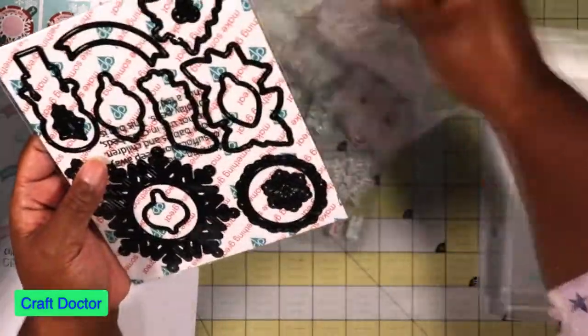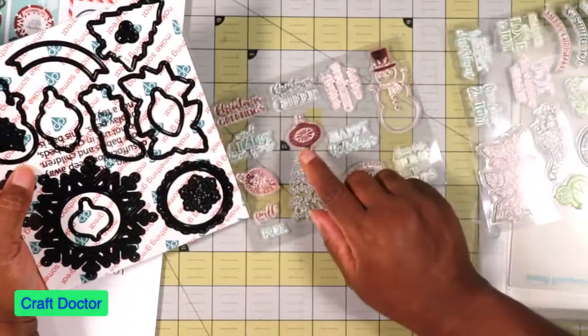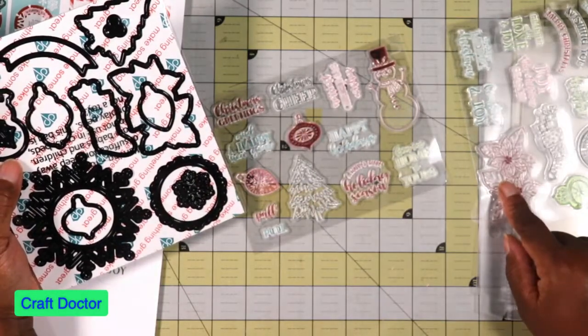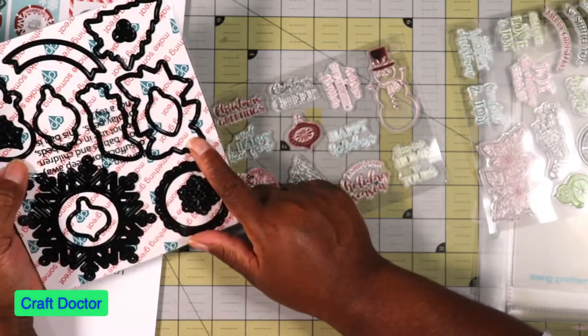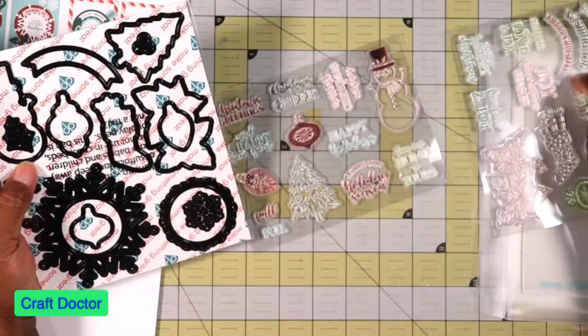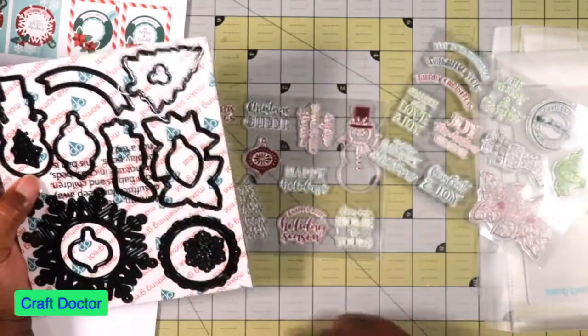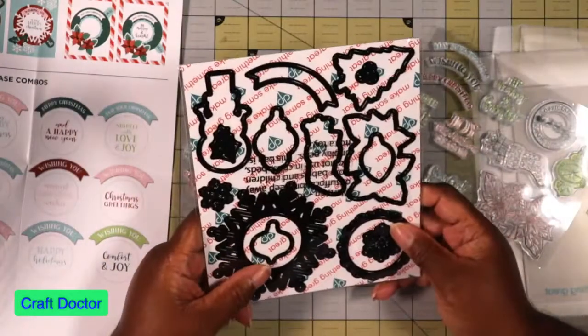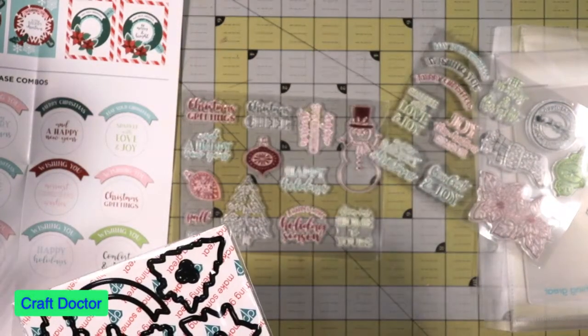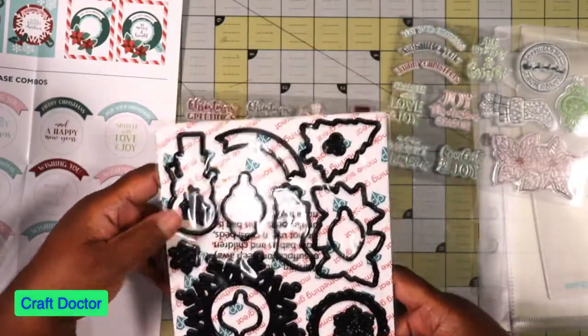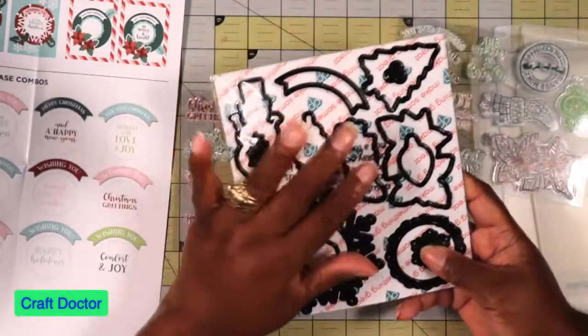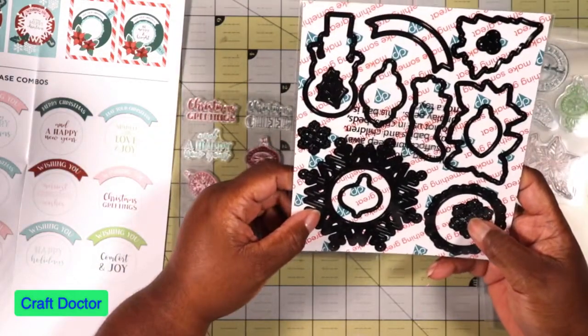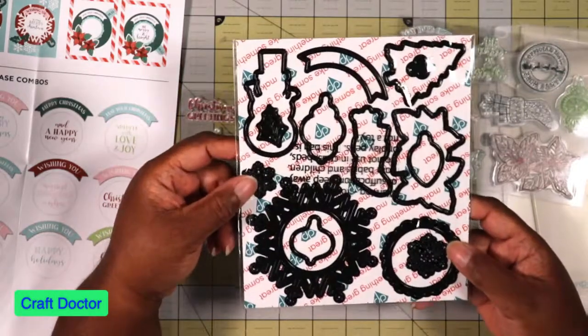Along with these good size stamps we have dies to match. We have the snowman, we have the ornaments, the flowers, poinsettias, the banners, the trees. We have everything here, even the snowflakes. There's a snowflake die and a leaf die here. We really have some extra stuff, and it even has little berries for the holly leaves.